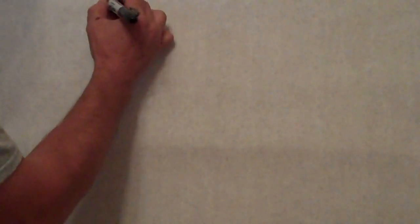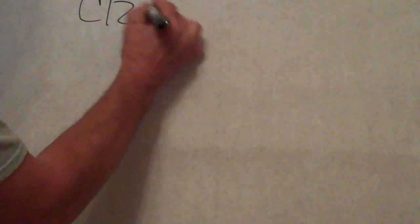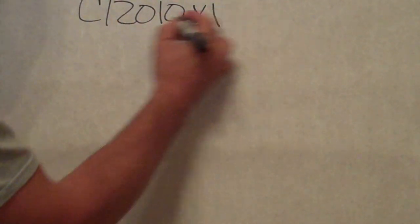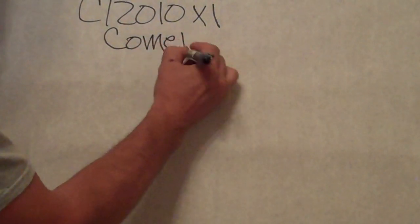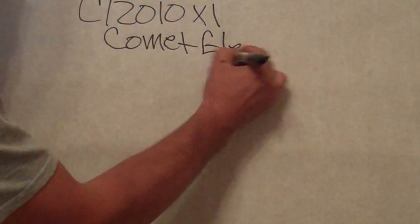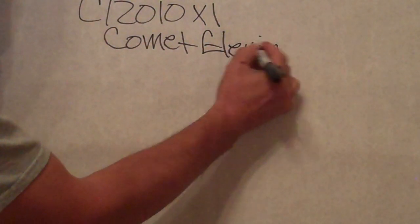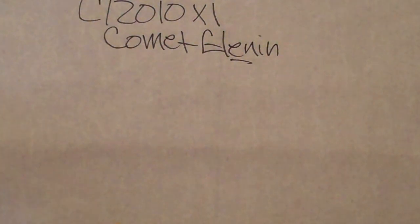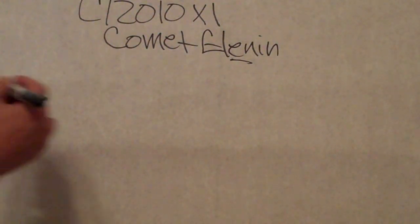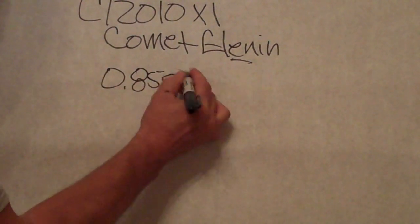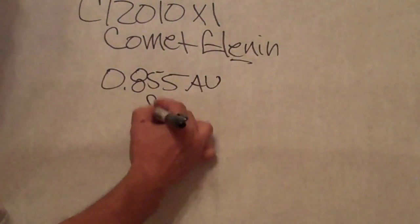Comet Elenin, C/2010 X1. Comet Elenin, Elenin. The emphasis is here, Elenin. Is 0.855 AU from Earth.